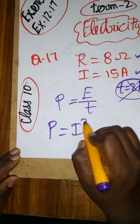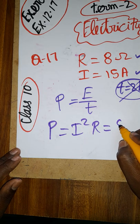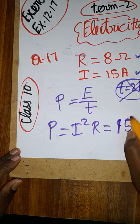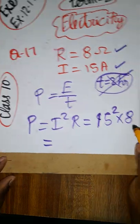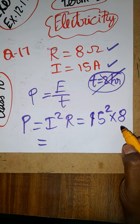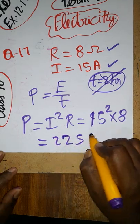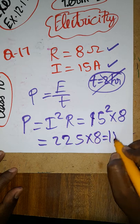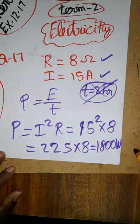Power is equal to I square R, which we know already, power formula. R is 8 ohms, I is 15. 15 square into 8, which will get the answer. 15 square, we can have the answer 225. 225 into 8 will get as 1800. The unit of power we are going to take it as watt. That is the answer.